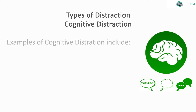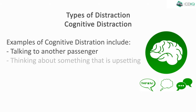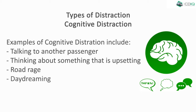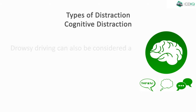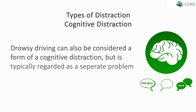Examples of cognitive distraction include talking to another passenger, thinking about something that is upsetting, road rage, and daydreaming. Drowsy driving can also be considered a form of cognitive distraction, but it is typically regarded as a separate problem of its own.